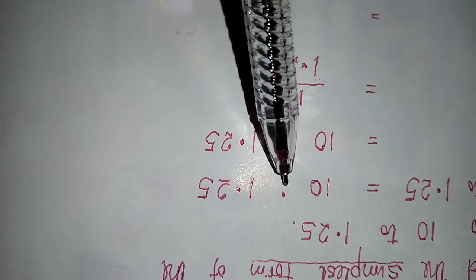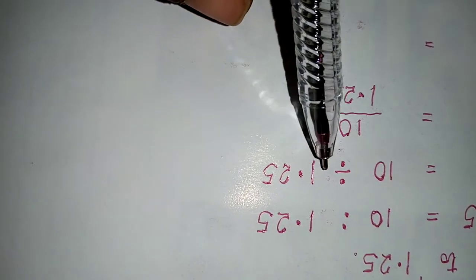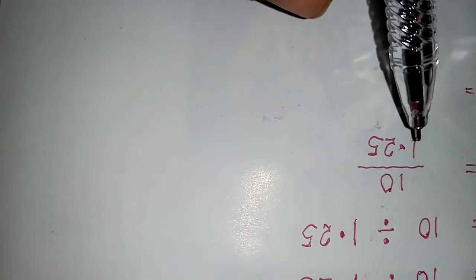So these two dots represent ratio. And ratio means divide. So it becomes 10 divided by 1.25. That means 10 over 1.25.